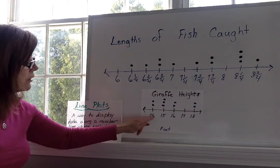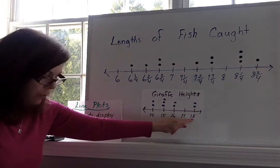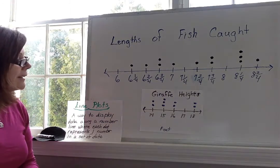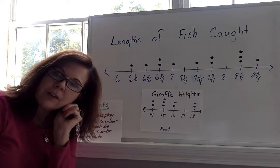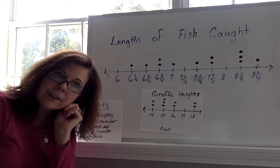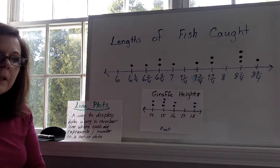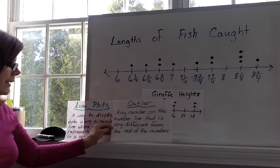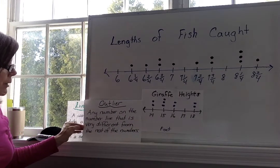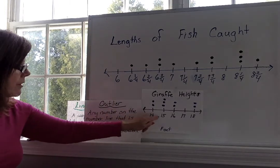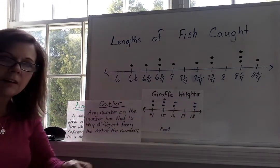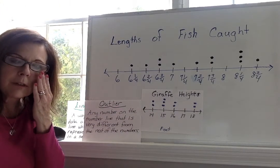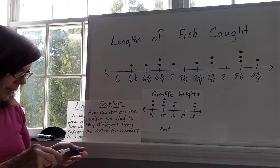How tall is the tallest giraffe? Hmm. Well, the tallest giraffe would have to be 18 feet tall. And then, my next question is, is 18 feet an outlier? So, remember, what does outlier mean? Any number on the number line that is very different from the rest of the numbers? So, here we have 14, 15, 16. And then, we jump to 18. So, do you think 18 feet would be an outlier? I think so. So, that is the outlier.